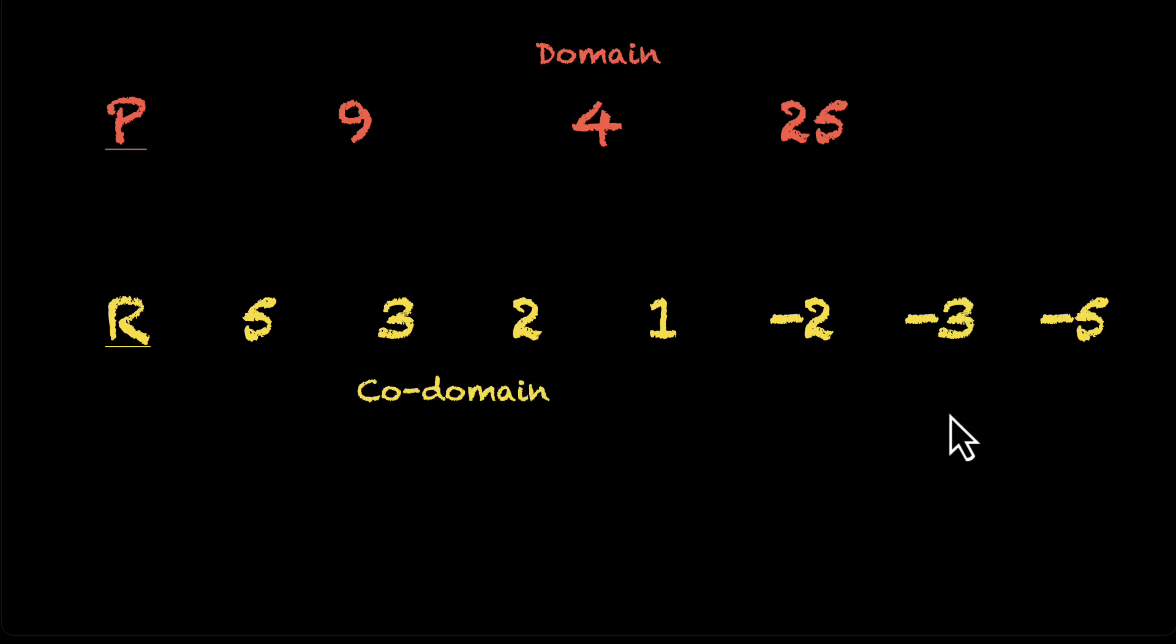Let's bring back the problem. P: 9, 4, 25. So that's our domain. R: 5, 3, 2, 1, minus 2, minus 3, minus 5. That's going to be the co-domain.